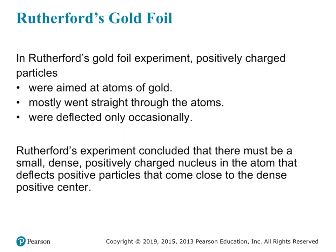One of J.J. Thomson's students named Rutherford was trying to prove that the plum pudding model was correct. He set up an experiment where he shot particles at a thin piece of gold foil. His thought was that if the plum pudding model is correct, then all of the particles should just pass right through, because there's nothing really dense within this model.